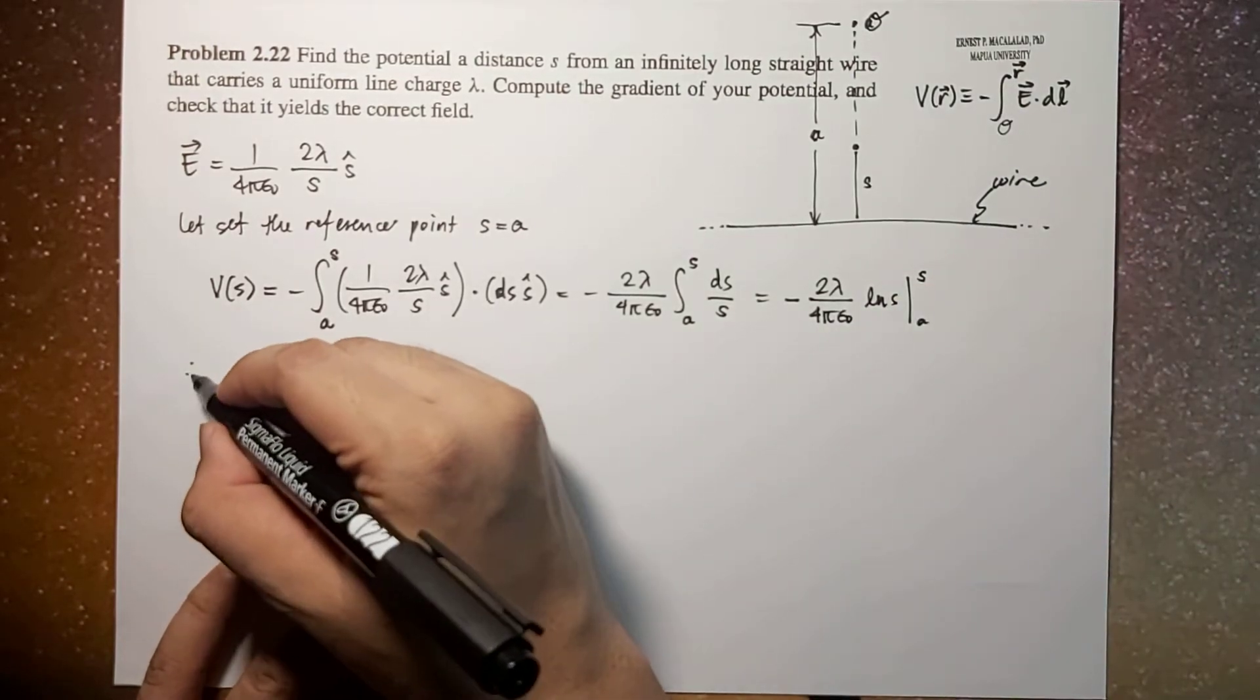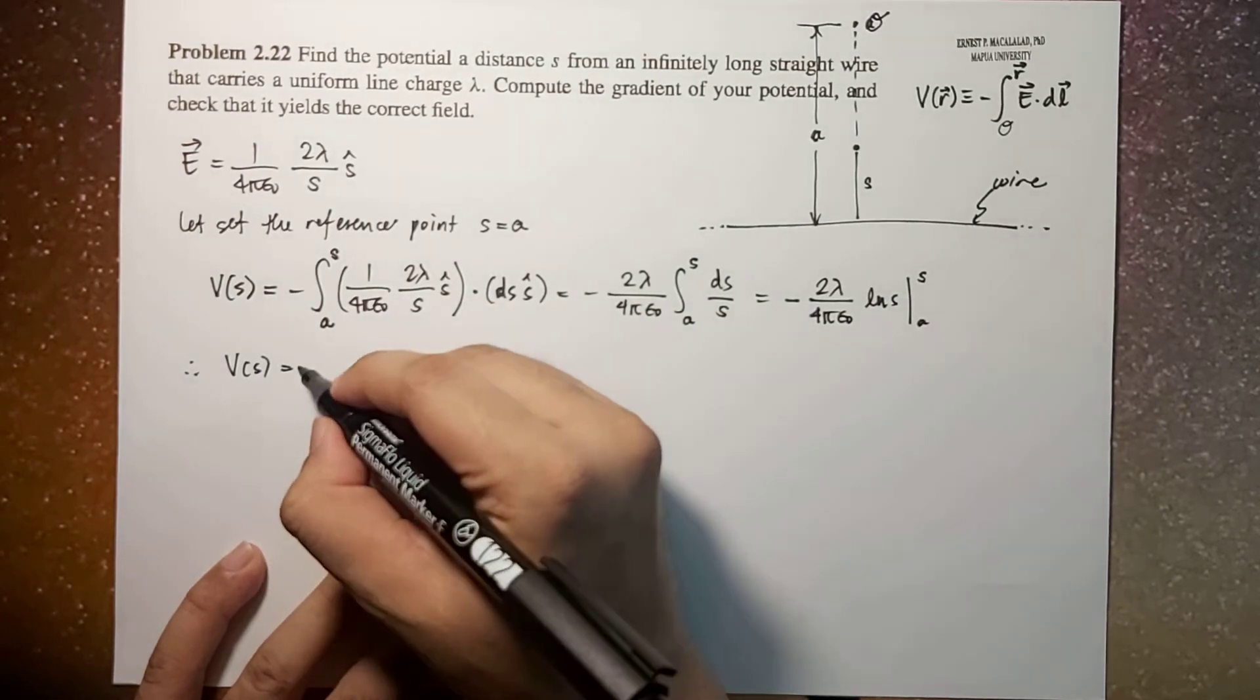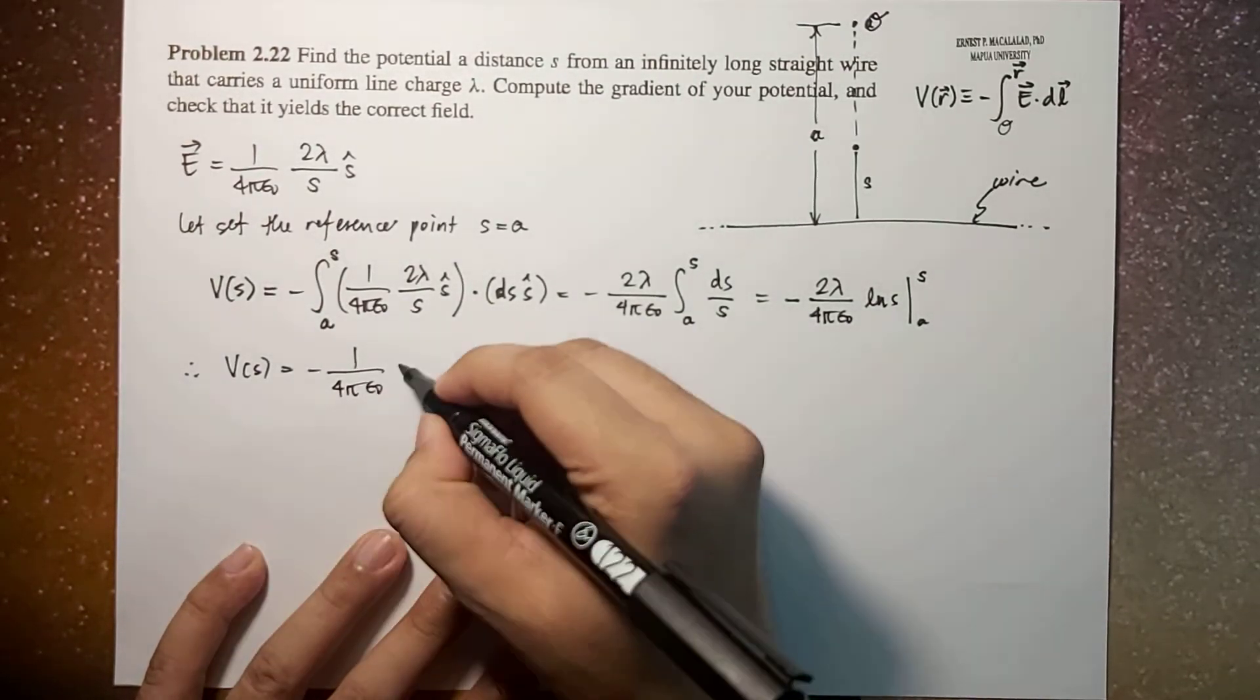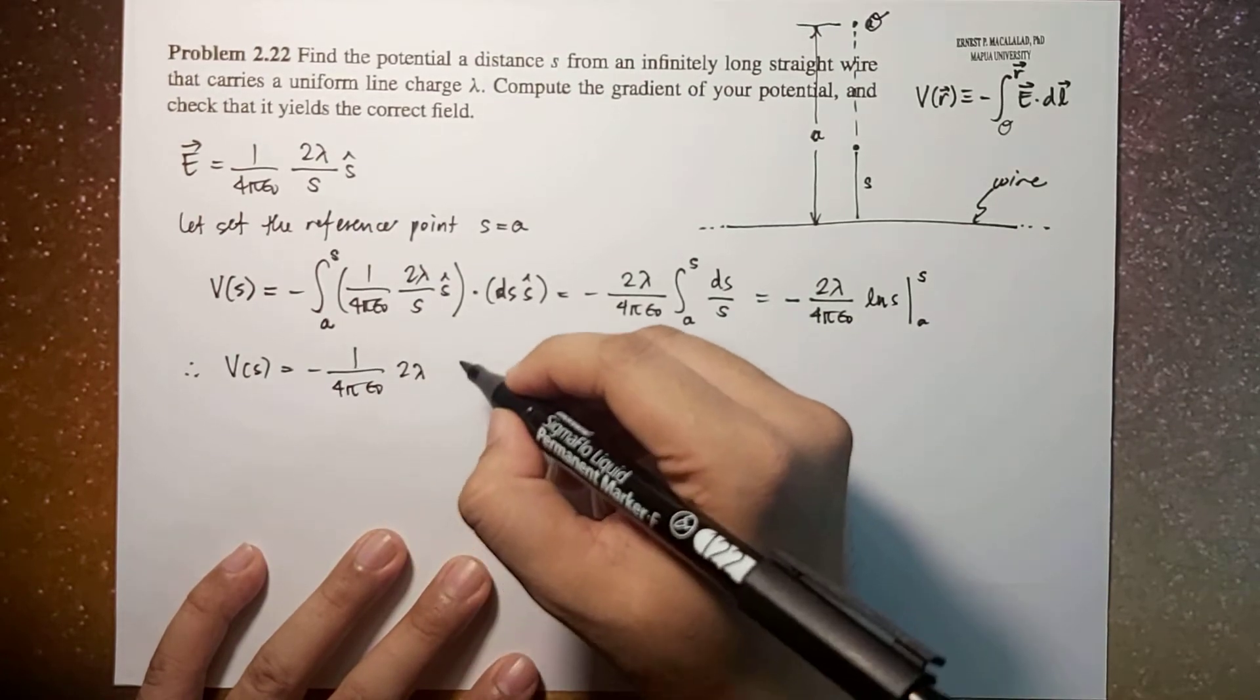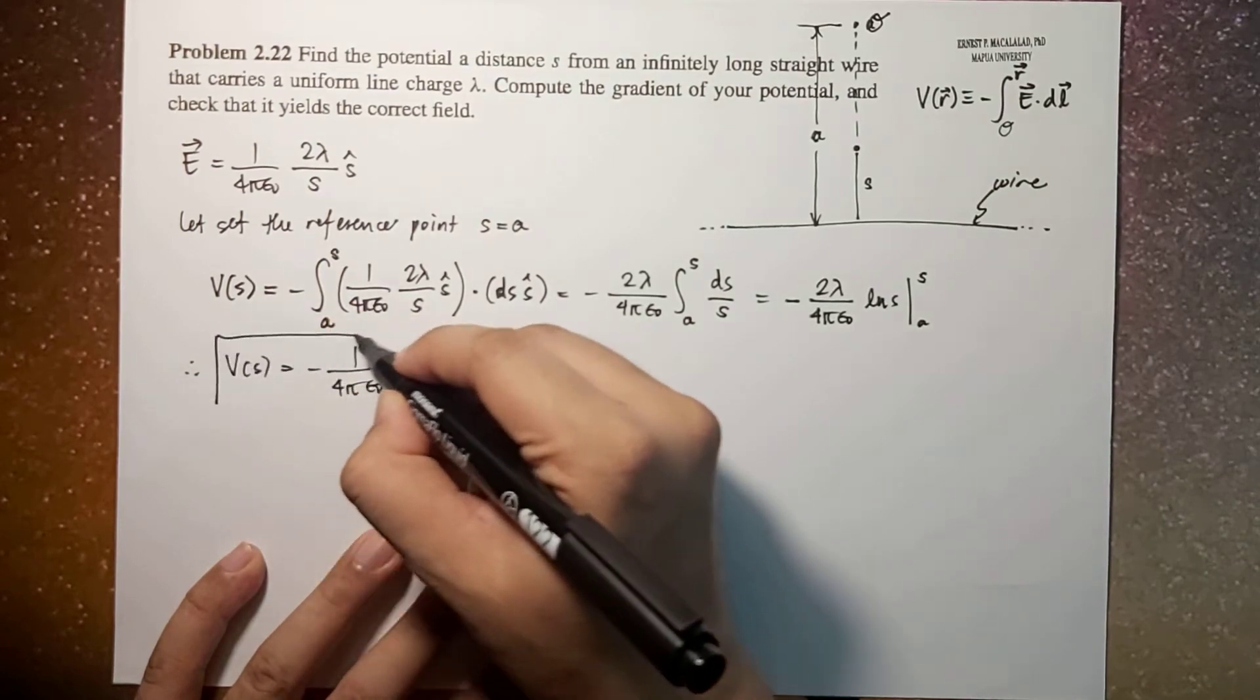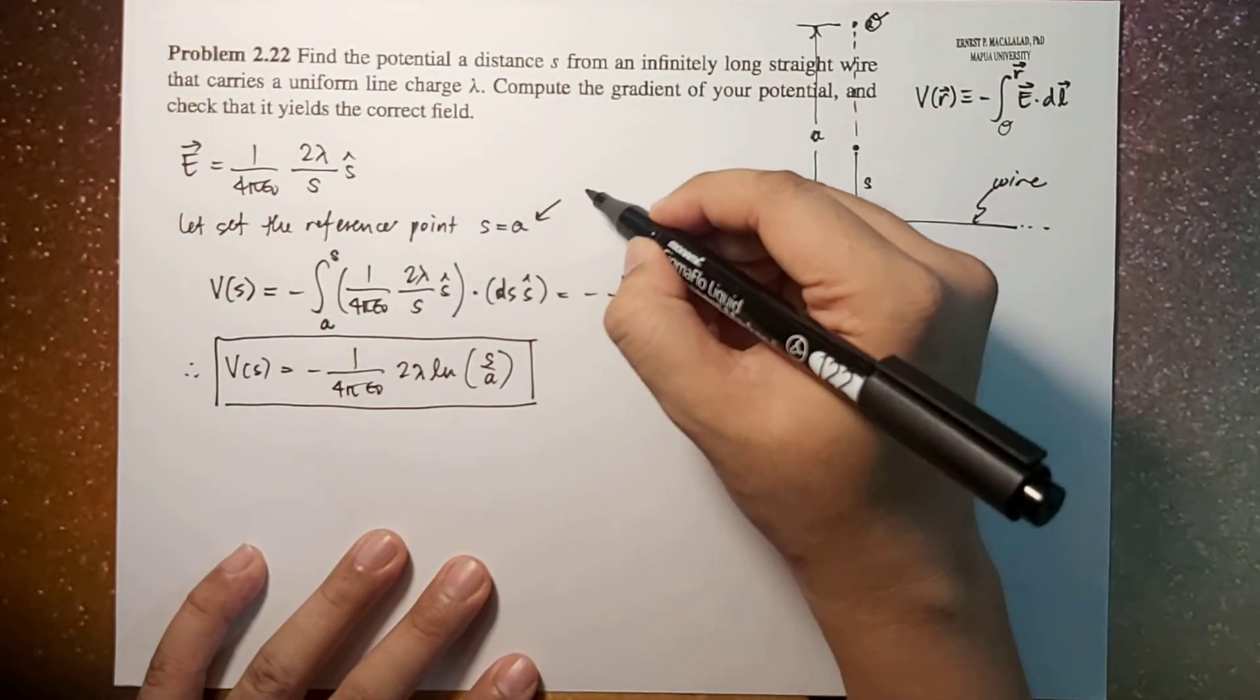Therefore V at s will now be equal to negative one over four pi epsilon naught times two lambda times ln of s over a. This is now the potential at some arbitrary point.